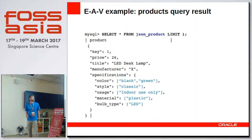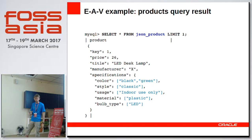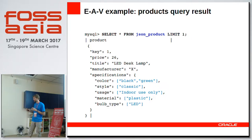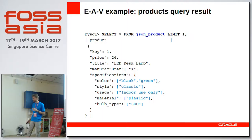This is the result — all those attribute values from the previous query are inserted here in specification, and it looks like actual JSON data. We initially had three relational tables; this is the way to build a JSON representation through aggregations and JSON_OBJECTAGG.